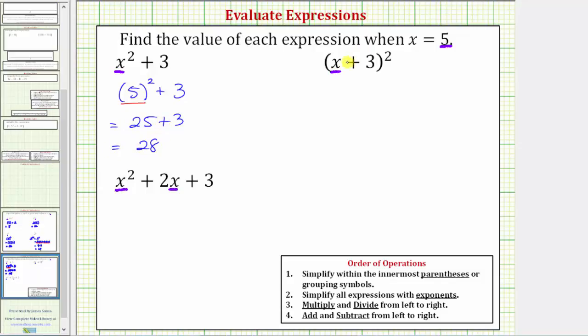The next expression, we have the quantity x plus three squared, where the quantity x plus three raised to the second power. So if x equals five, we'd have the quantity five plus three, the quantity raised to the second power.